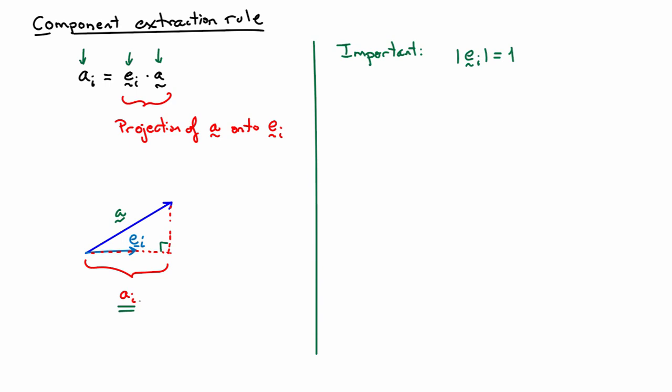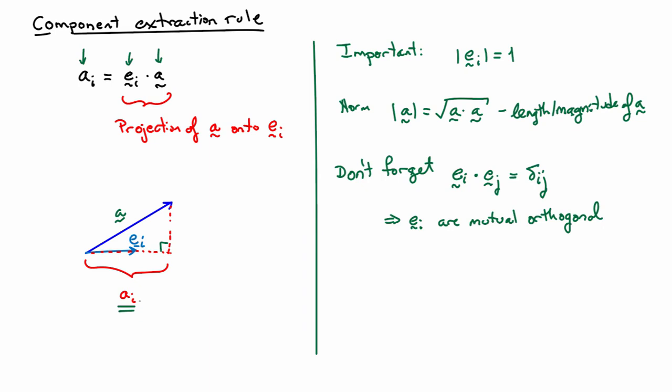It's important to note that the norm of ei must equal one for this to numerically be the projection. The norm of a vector a is the square root of the dot product of a with itself — that gives the length or magnitude of a. Don't forget that the basis vectors must be orthonormal: ei · ej = delta ij. If that's not the case, you can still proceed, but you have to take a few other things into consideration to get the right results.